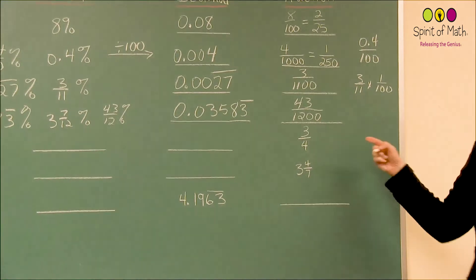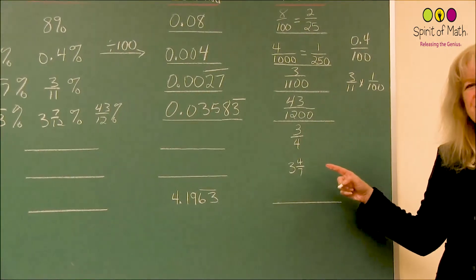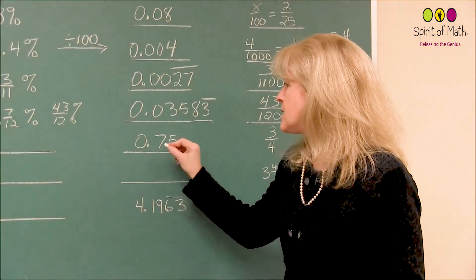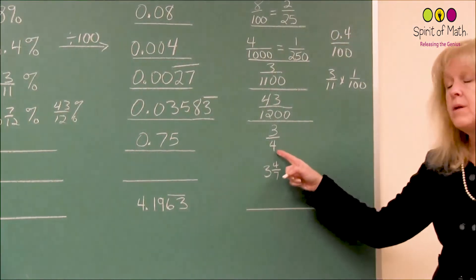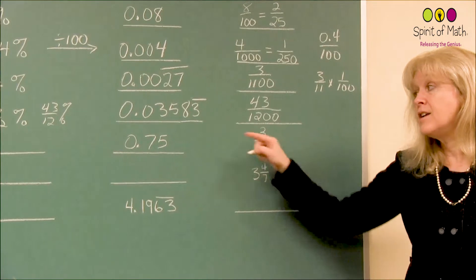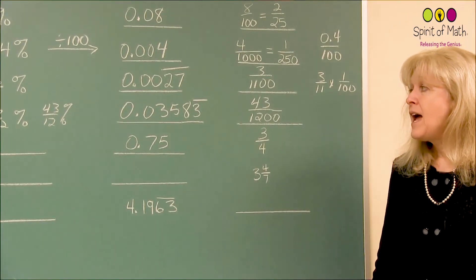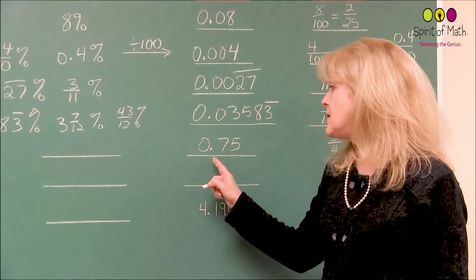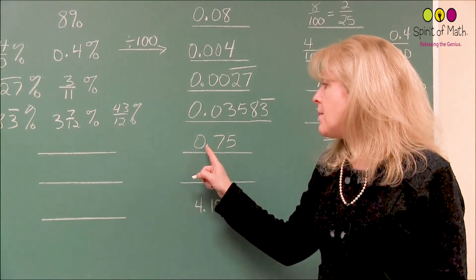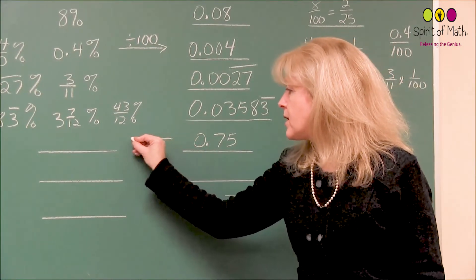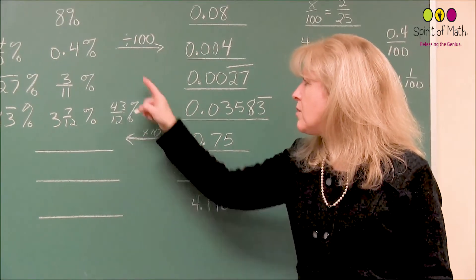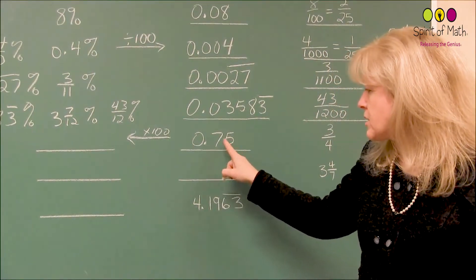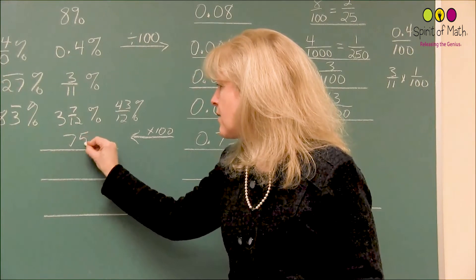Now for the next one, you're going to go the other way. You've got 3 quarters and you want to write that as a decimal. Hopefully if you know your decimal equivalents, it's equal to 0.75. If you don't, you say 3 divided by 4, do your long division, and you'll get the answer. Now you need to move this decimal place over, because in this case you're going to be multiplying by 100. When multiplying by 100, the decimal place moves to the right two places. So that's 75 percent.